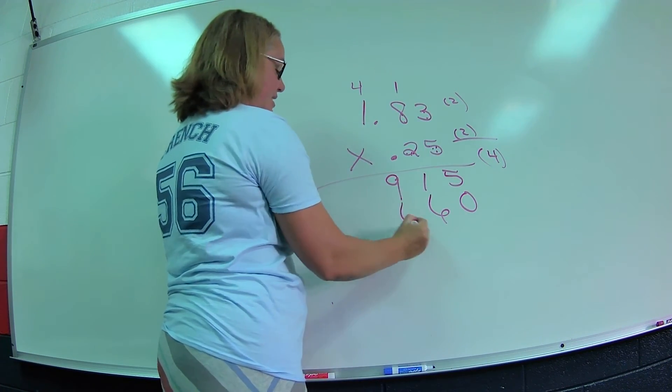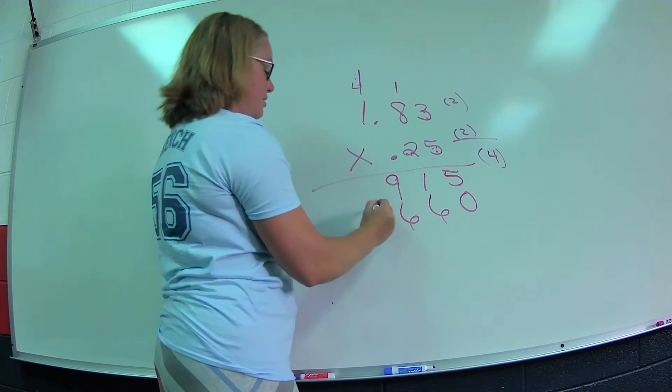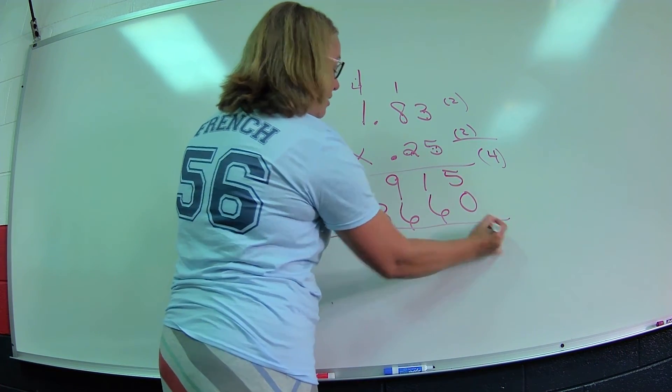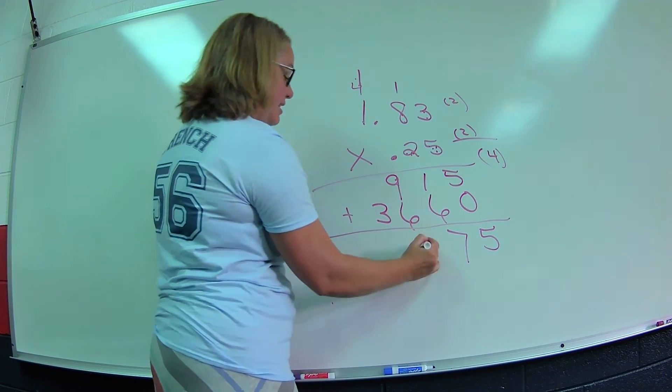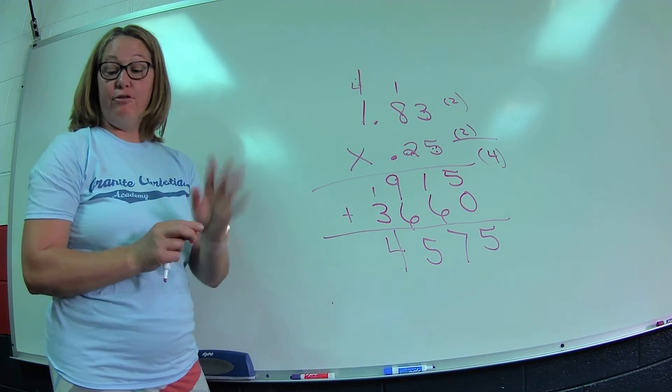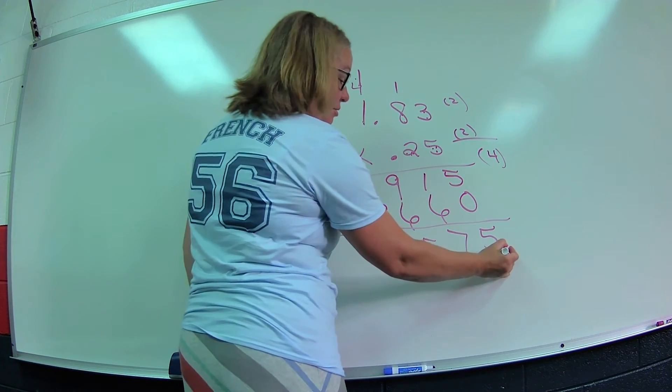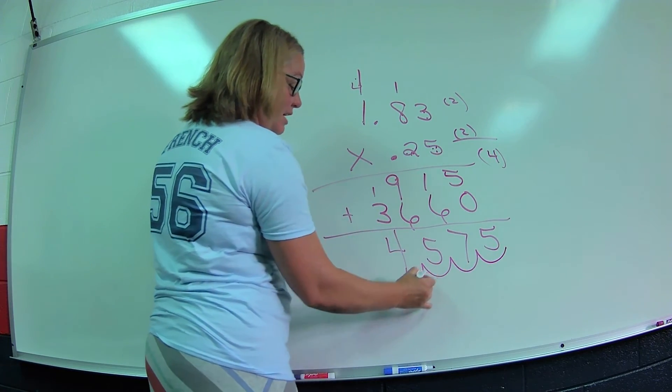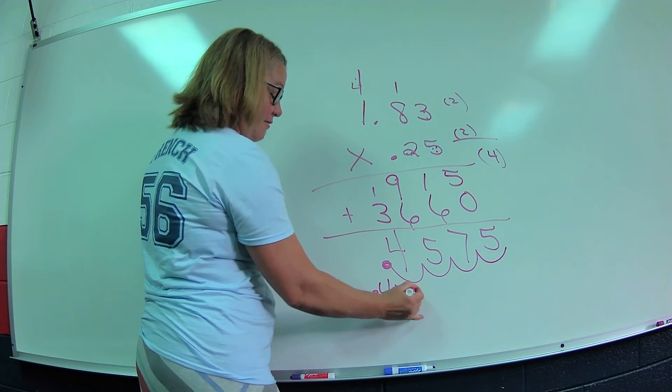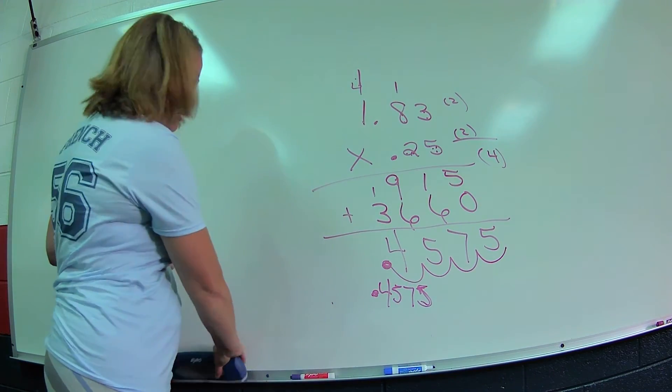Now I add my partial products. Five plus zero, one plus six is nine, nine plus six, one plus three is four. Now I have four decimal places, so I start here. One, two, three, four. So I make sure my answer is 0.4575.